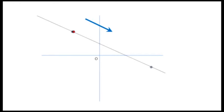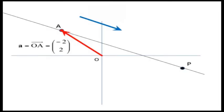We begin by choosing a point on the line, which we can call A. The position of this point is described by its position vector. In this example, it is minus two, two. Next, we define a direction along this line using a ruler. We can describe the orientation of the ruler using a vector parallel to it. In this case, we can use the vector B, which is two, minus one.